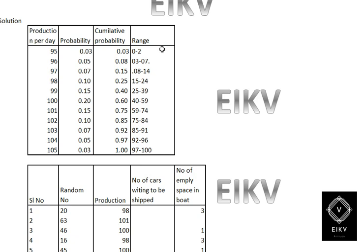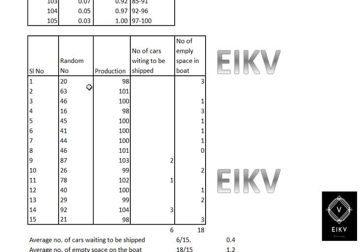For the ranges: the first cumulative probability is 3, so 3−1=2, giving range 00–02. The next cumulative probability is 8, so 8−1=7, giving range 03–07. Continuing: 08–14, 15–24, 25–39, 40–59, 60–74, 75–84, 85–91, 92–96, and 97–99.